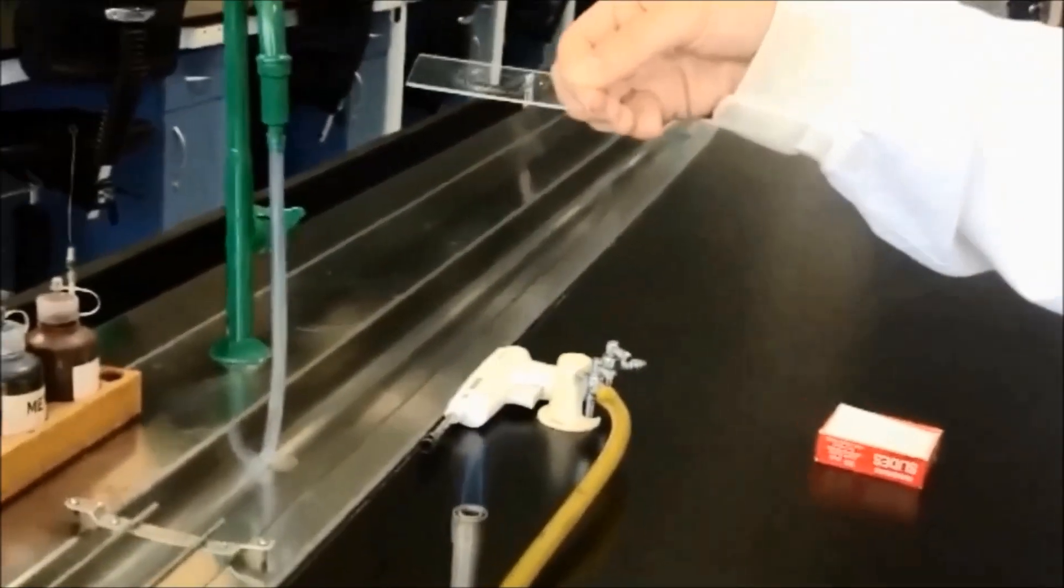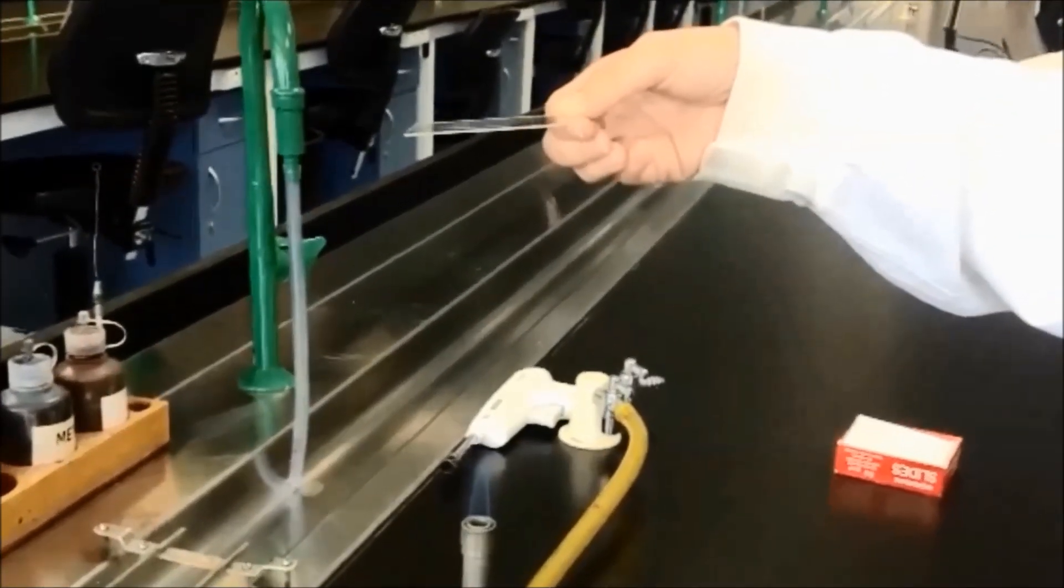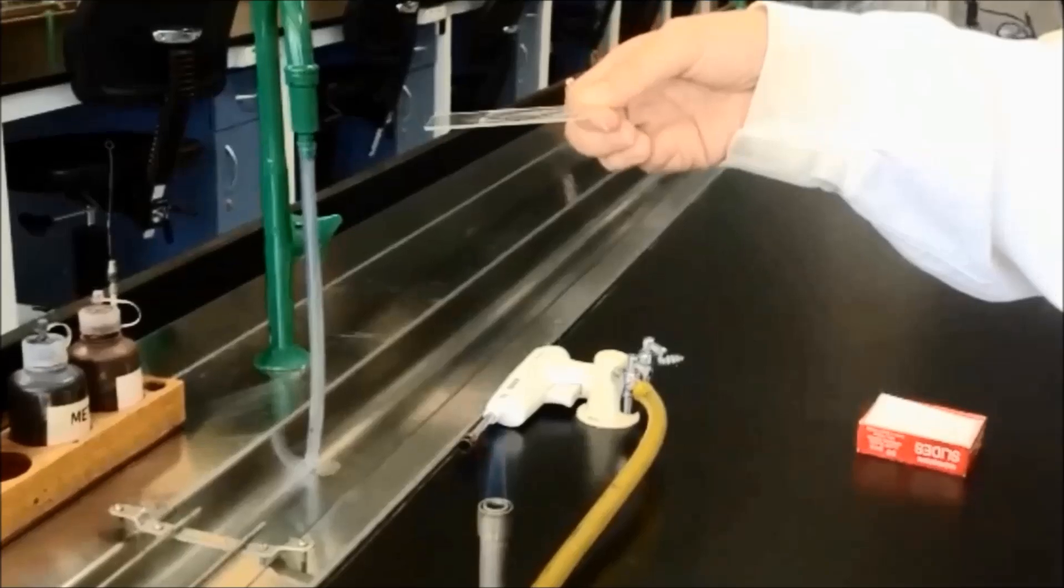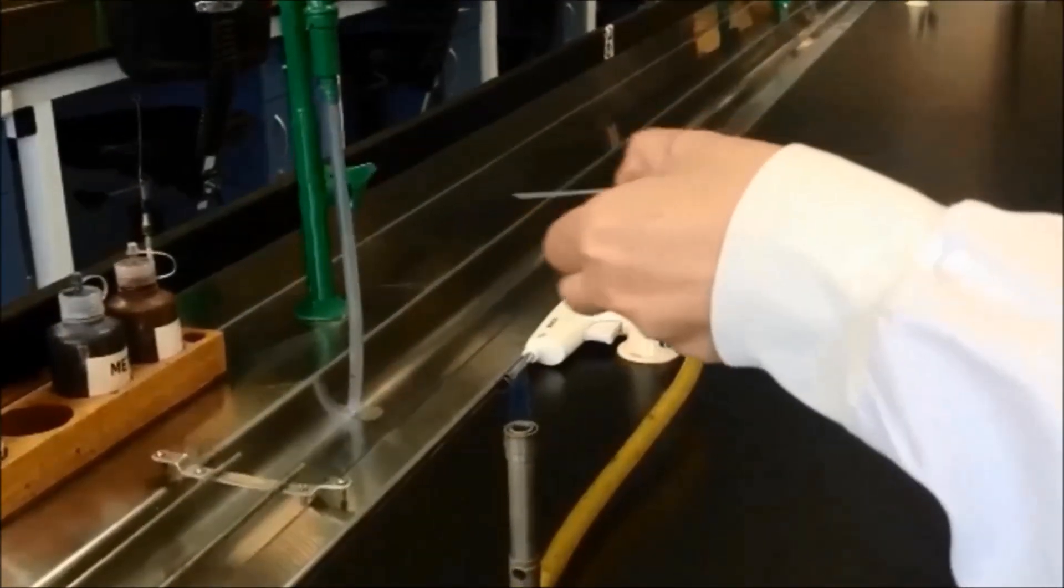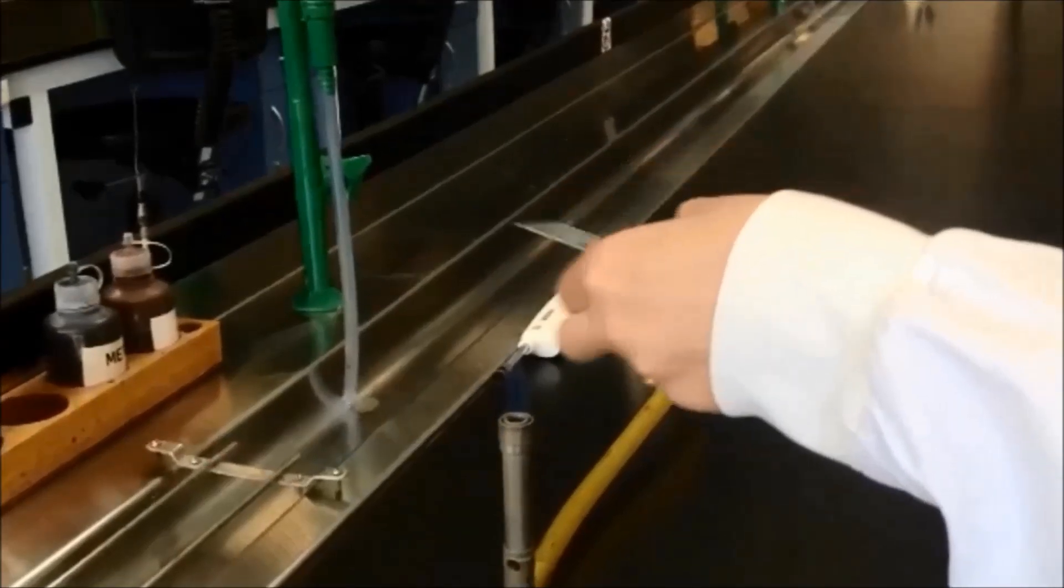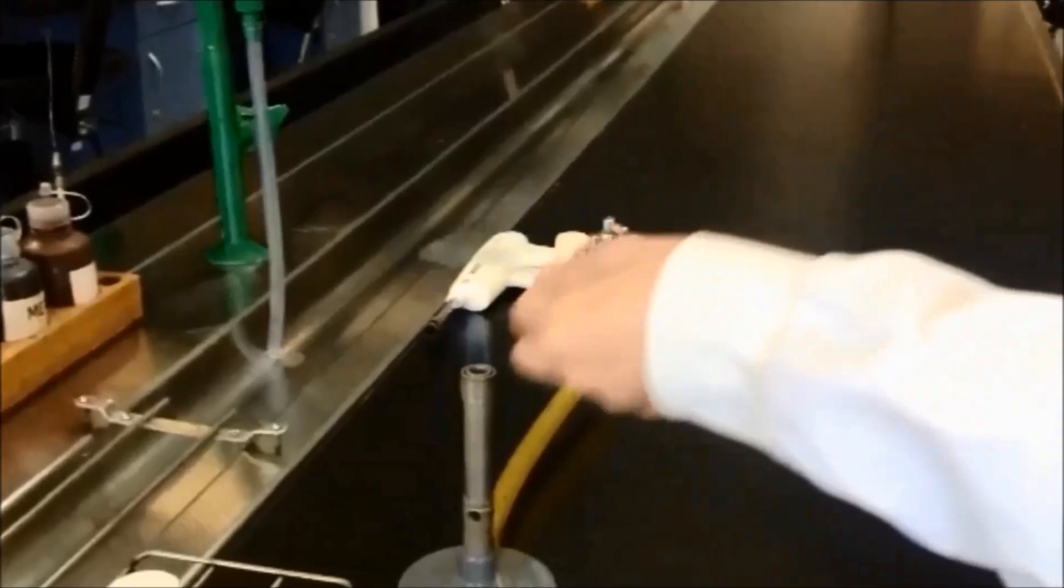Dry the slide, holding it about 30 centimeters above the Bunsen flame. Fix the bacterial smear by passing the slide slowly through the flame three or four times. Be careful not to overheat the slide.